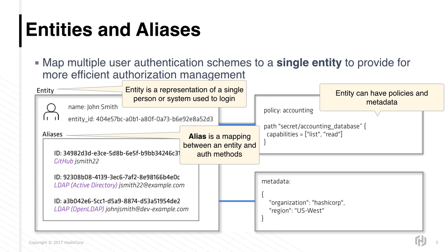Entities are single logical identities that represent users and applications for the tokens that have been generated when authenticating via an auth back-end. For example, a user may have AWS credentials as well as LDAP or Active Directory credentials. These separate credentials, known as aliases within Vault identity, and all of the tokens generated by these credentials are all recognized by referring to the single user or application within the various parts of Vault. Vault simplifies administration across multiple identity providers, or IDPs, by bridging them into one common identity.